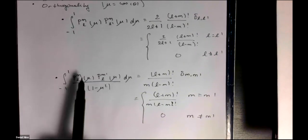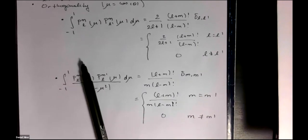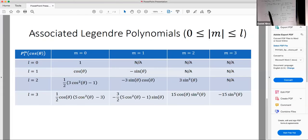To get an idea of what these functions look like, we'll look at some examples here. So these functions P_m^l are actually polynomials, which again, are only defined when m is between zero and l.